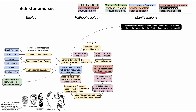The manifestations of schistosomiasis depend on where in the life cycle the schistosomes are. As soon as they penetrate the skin, they can cause a local reaction called swimmer's itch, or cercarial dermatitis — a pruritic maculopapular rash at the point of entry into the human skin.